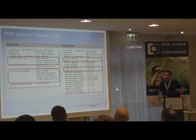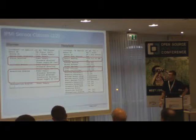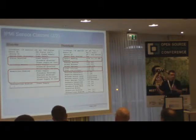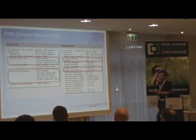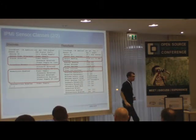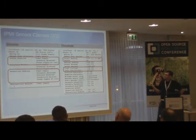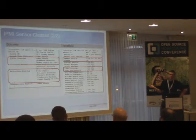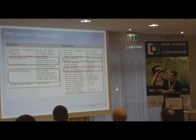We can see this on the example slides. On the left side we have a discrete sensor — a power supply from an Intel SR2500, a four or five year old system. This sensor can have four different states: presence detected, failure detected, predictive failure, or power supply AC lost. We see that the power supply has been detected and is present, but it has lost its power on the inlet.